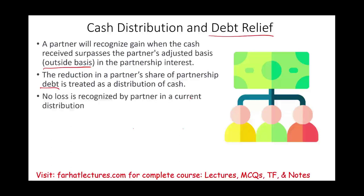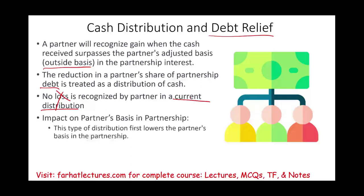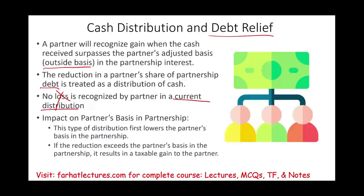No loss is recognized by a partner in a current distribution — there is no such thing as loss recognition. This type of distribution lowers the basis of the partners in the partnership. If you receive cash, you lower your basis. If the reduction exceeds the partner's basis, it results in a taxable gain. This is a summary of what we just discussed.